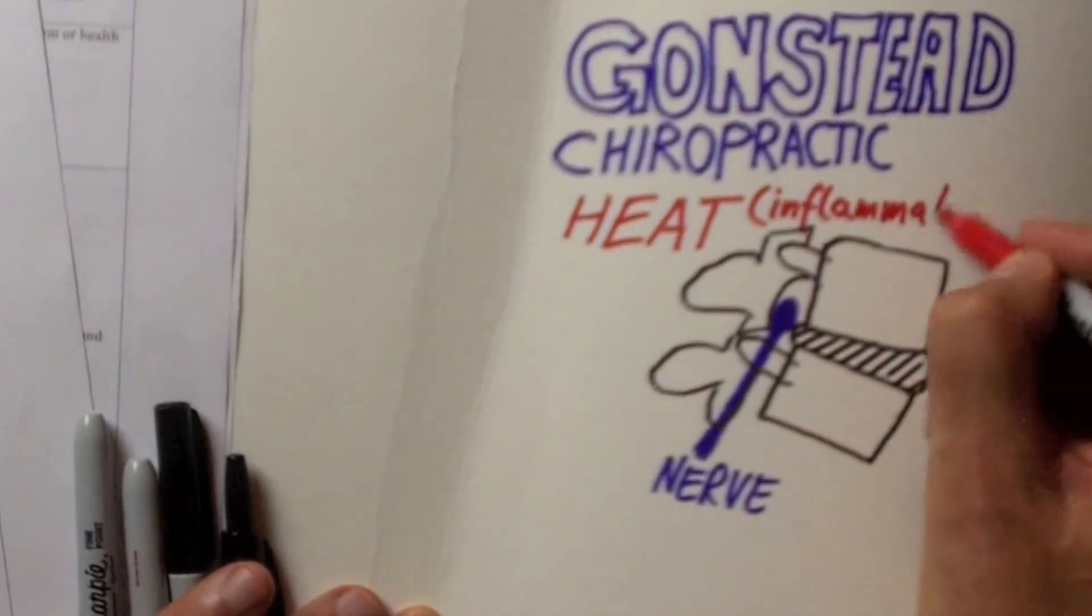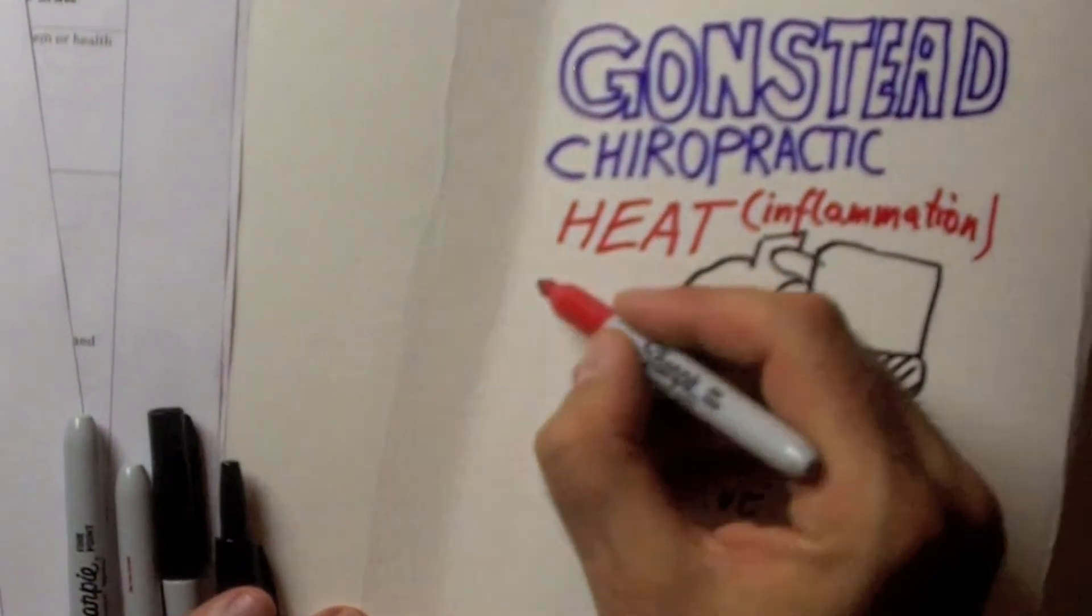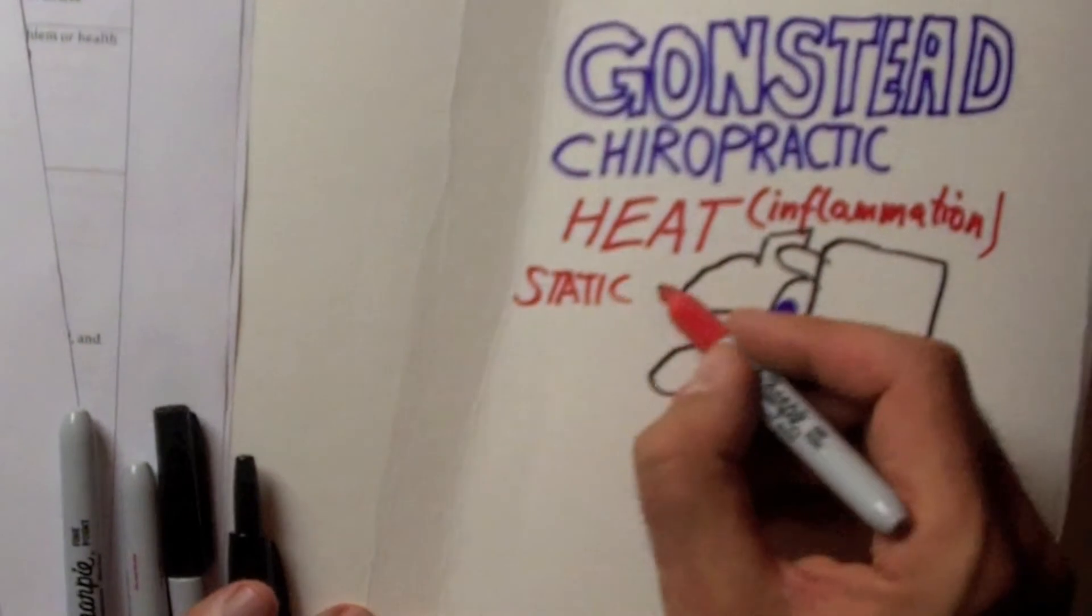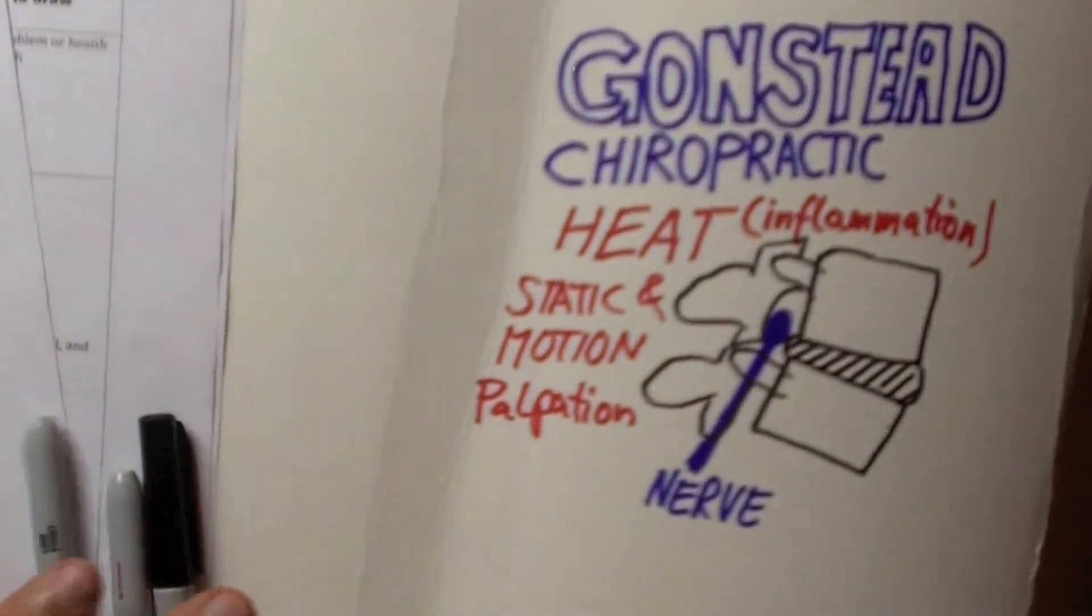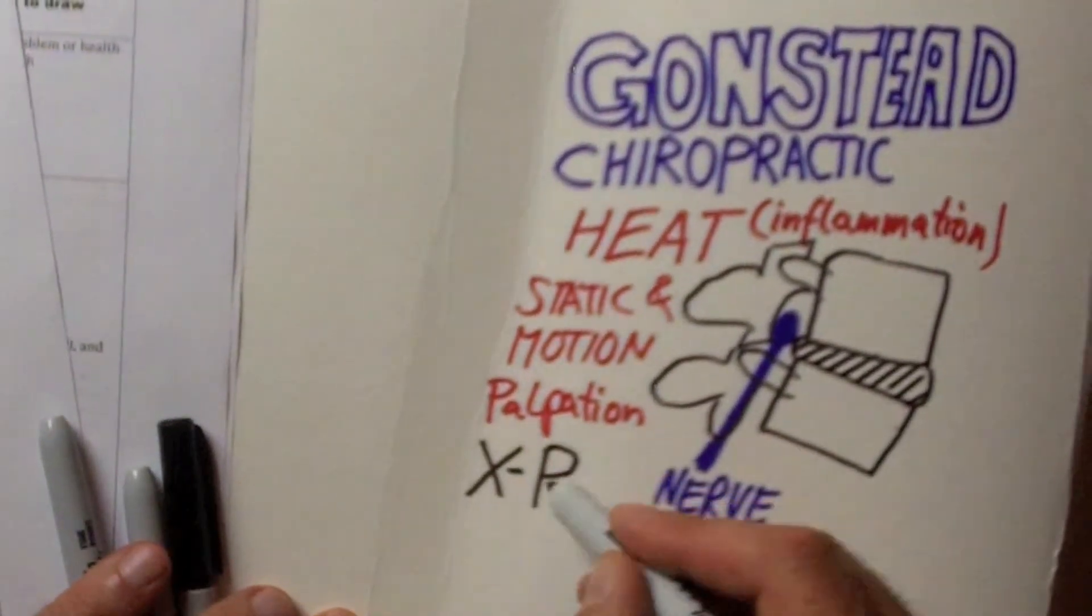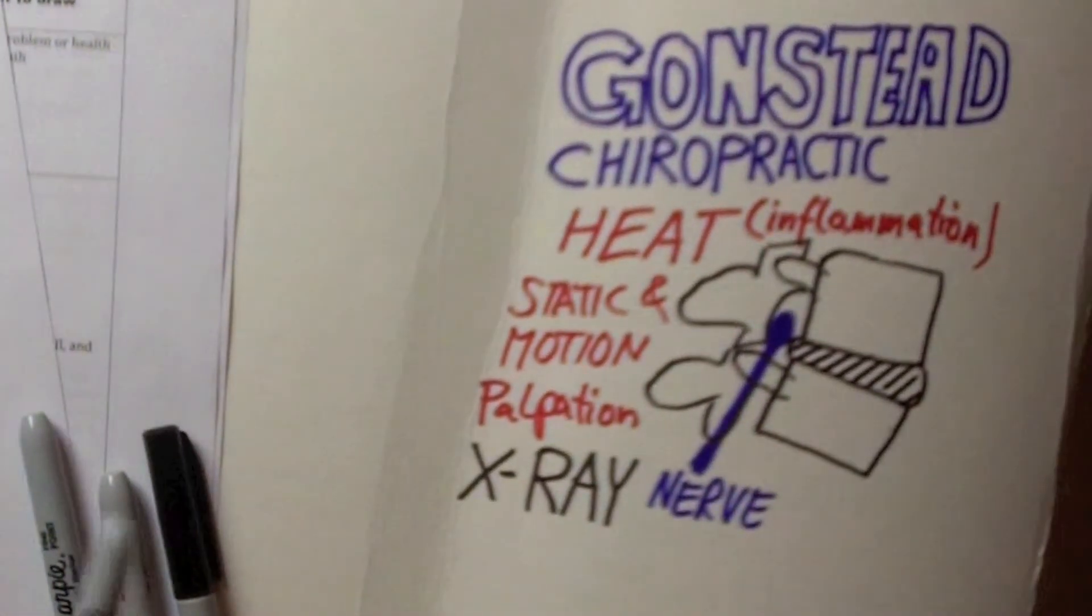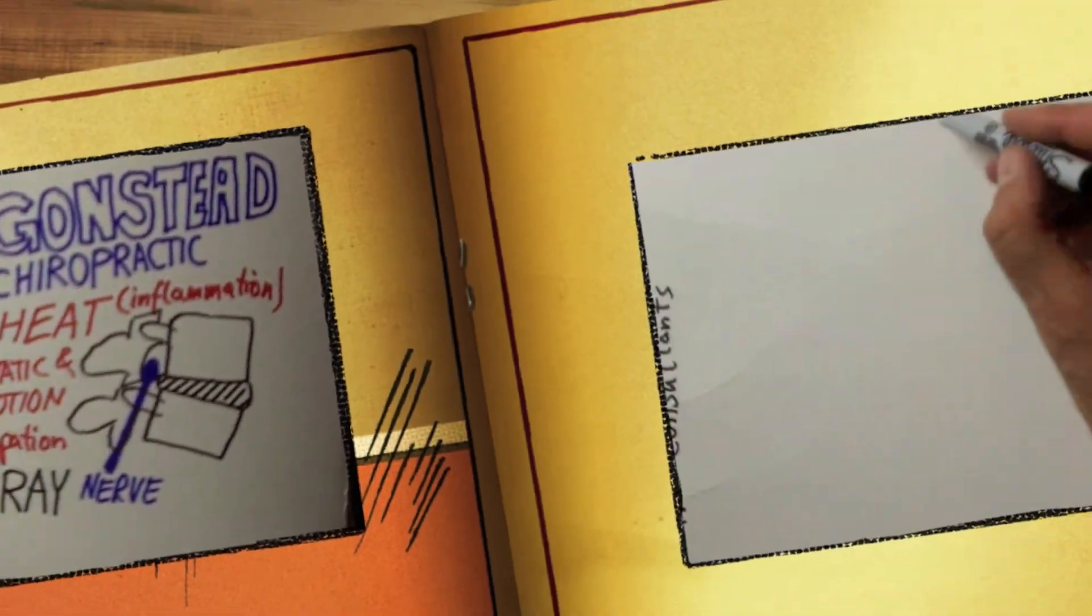Now, in our office, we are using the Gonstad system of chiropractic. It's one of the oldest techniques which has successfully stood the test of time. Our adjustments are painless, precise, and without rotation and therefore safe for everyone.